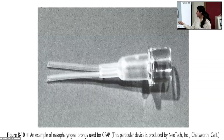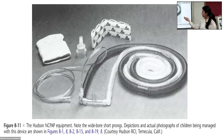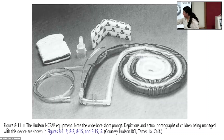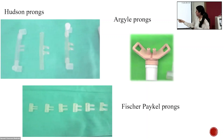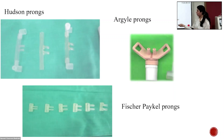This is an example of nasopharyngeal prongs used for CPAP. This is the Hudson prong for delivery of nasal CPAP — it is curved and anatomically contoured. These pictures show the Hudson prongs, the Argyle prongs, and the Fisher & Paykel prongs. In my experience, I have used the Fisher & Paykel prongs quite frequently. They are easy to use and user friendly.